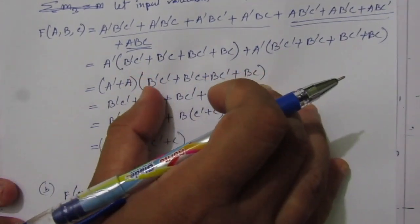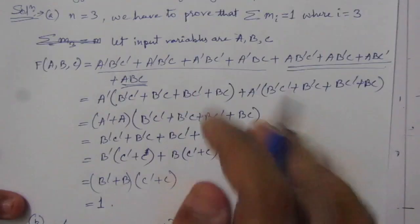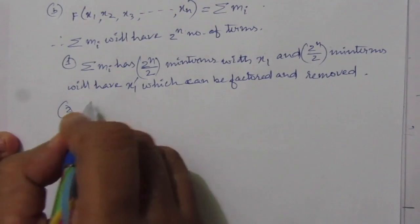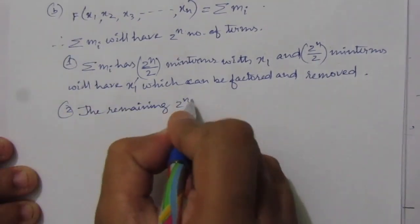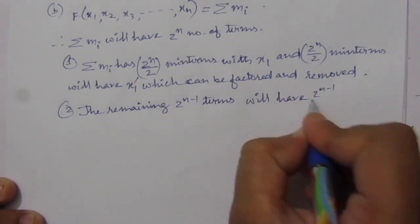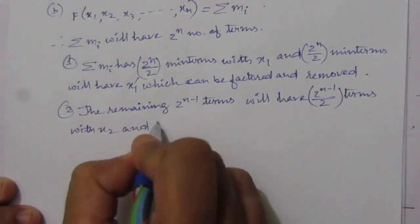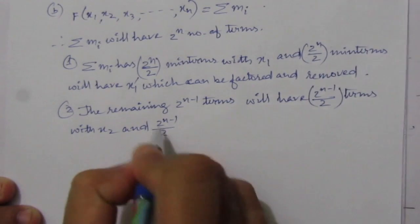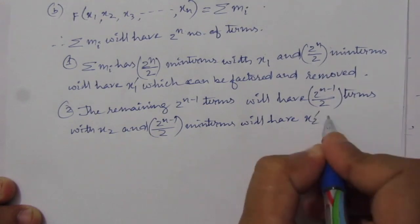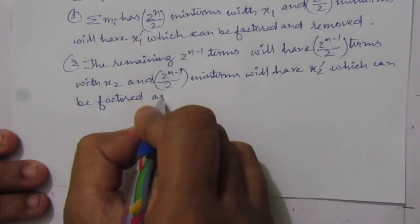Now we will have 2^(n−1) terms — because here we had 4 terms, meaning 2^2, that is 2^(3−1) terms. Next, the remaining 2^(n−1) terms will have 2^(n−1)/2 terms with x2, and 2^(n−1)/2 minterms with x2-bar, which can be factored and removed.